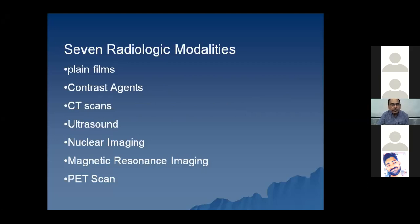We will discuss the contrast agents in a little bit of detail. These are the different radio-opaque or opaque materials which are administered to the patient either intravenously or intraluminally to see the organs which are not visible on the plane films. Then there are CT scans, ultrasound, nuclear imaging or PET imaging, magnetic resonance imaging MRI, and the PET scan - positron emission tomography.